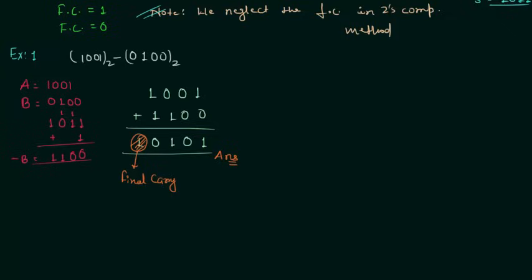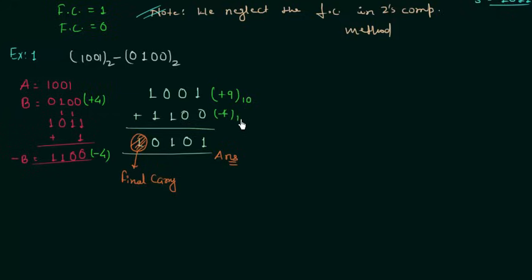And you can definitely cross-check this. 1001 is plus 9 in decimal. 0100 is positive 4. So 1100 is negative 4. And when you perform the addition of plus 9 and minus 4, the result is going to be plus 5. And you can cross-check: 0101 is nothing but plus 5. So our answer is correct.